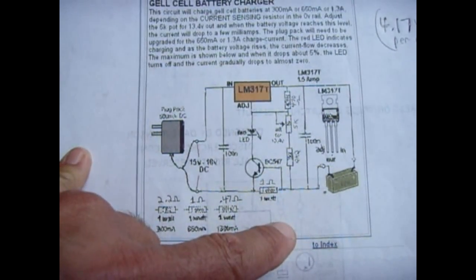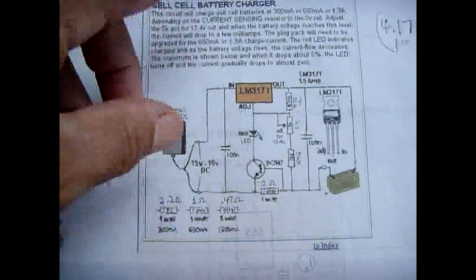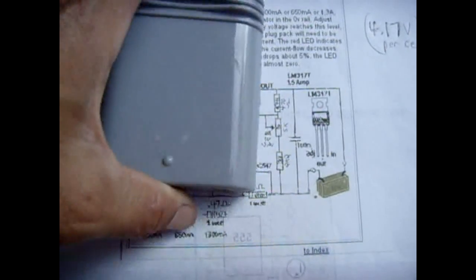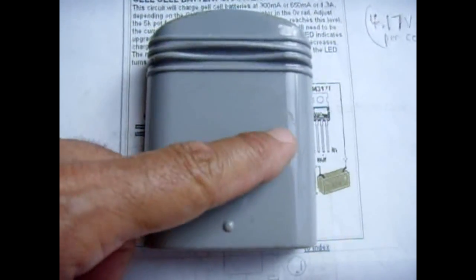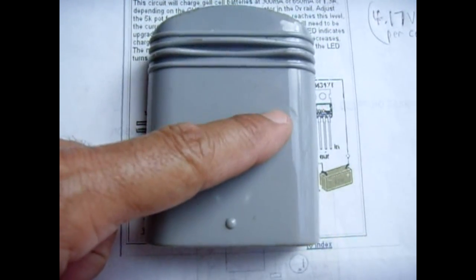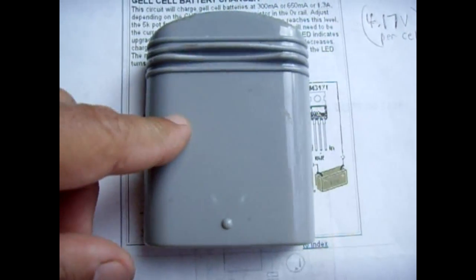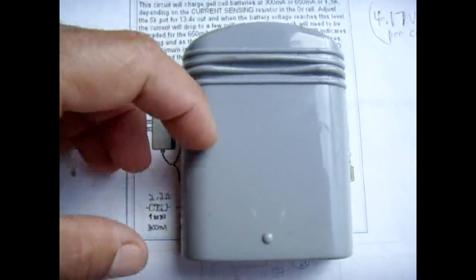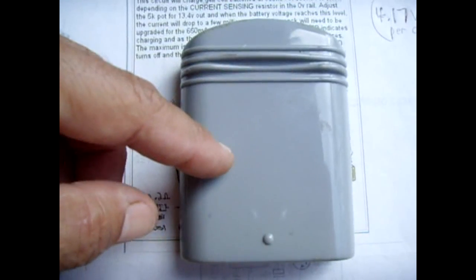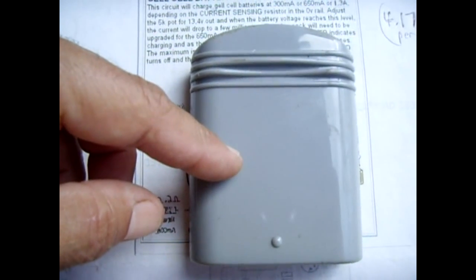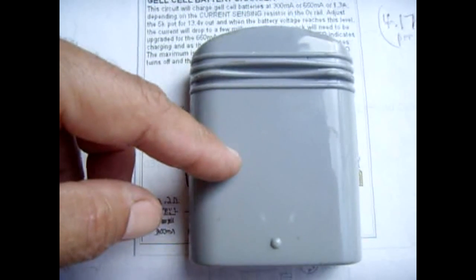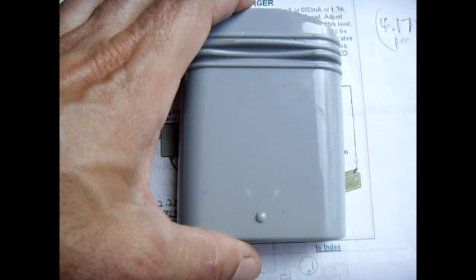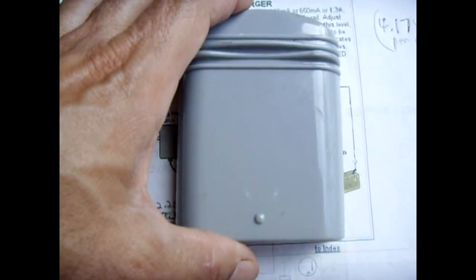Ideally you never want to charge higher than 4.2 volts per cell for the lithium-ions. So to be safe, I charge these at roughly 4.16 to 4.17 per cell. From everything that I read, it's far better to slightly under-charge a lithium-ion battery than it is to fully charge it or leave it on charge. So knowing that, I set the maximum charging voltage at eight point three four volts.